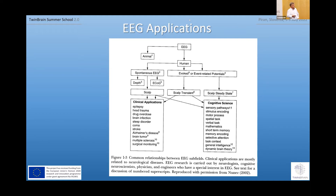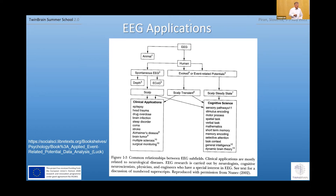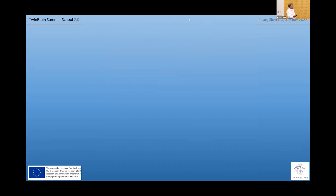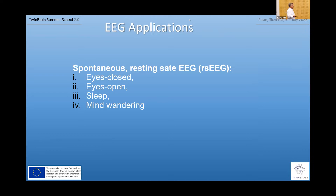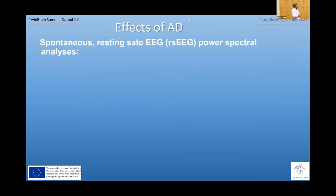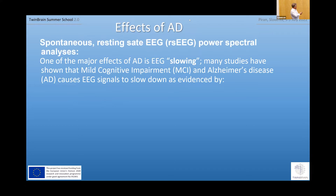Here is the website for the latest publication of Steven Luck — his ERPBookLab website; very good resource. Spontaneous resting EEG can be done with eyes closed, eyes open, in sleep, and even during mind wandering or resting state. What are the major findings? The major finding is so-called slowing of EEG in AD. Many studies have shown that mild cognitive impairment and Alzheimer's disease cause EEG signals to slow down, evidenced by increased power in lower frequencies — primarily delta and theta — and decreased power in higher frequencies alpha and beta.